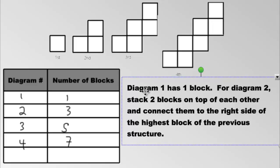But look what I wrote. I wrote diagram one has one block, yes it does. Diagram two, stack two blocks on top of each other. What does that mean? It means stack two blocks, here's two blocks, stack them on top of each other and connect them to the right side. We're not putting it on the left side of the last block, we're connecting to the right side of the highest block of the previous structure. So the previous structure to this one would be the one block, we're going to connect two blocks to the right side of it to make this one.